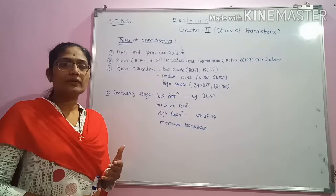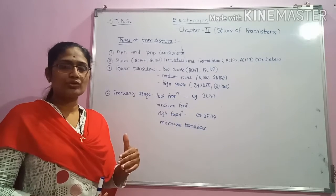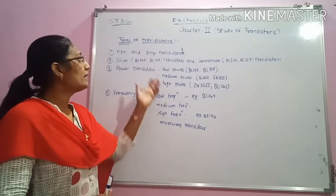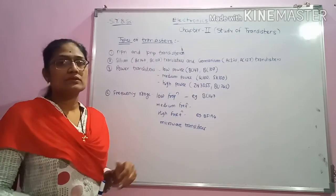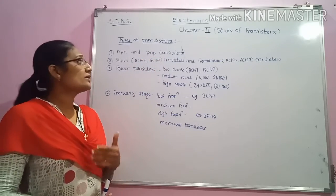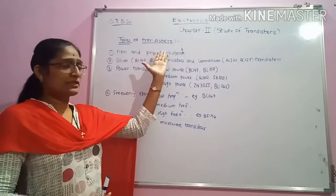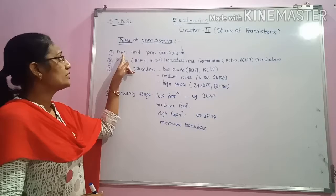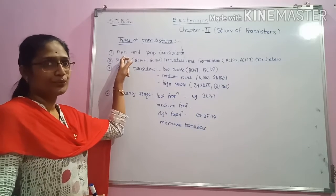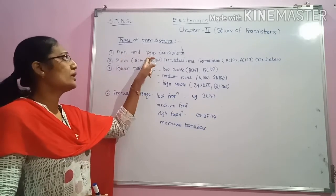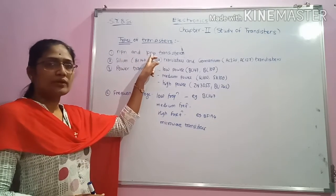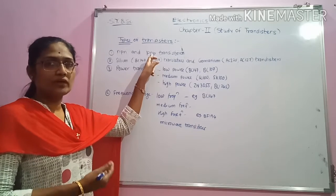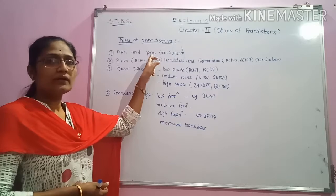In case of NPN transistors, the conduction of current is due to the migration of majority charge carriers, that is electrons. In case of PNP transistors, the conduction of current is due to the majority charge carriers that are the holes. There will also be the generation of base current due to the electron-hole recombination process, which gives rise to base current IB.